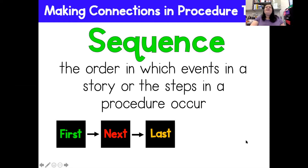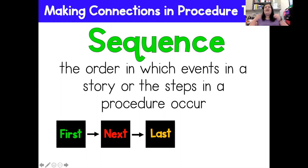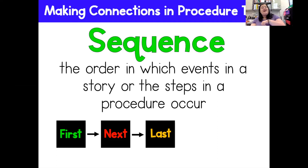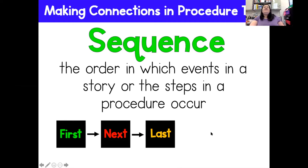And of course, in a procedural text, you will have a sequence. A sequence is the order in which events in a story or steps in a procedure occur. So if you're thinking about making a peanut butter and jelly sandwich, the first thing you do is take out your bread. Next, you smear your peanut butter on one side of the bread, then you smear the jelly on the other side. And then finally, you put your sandwich together and eat it. Those are a sequence — steps: first, next, and last.